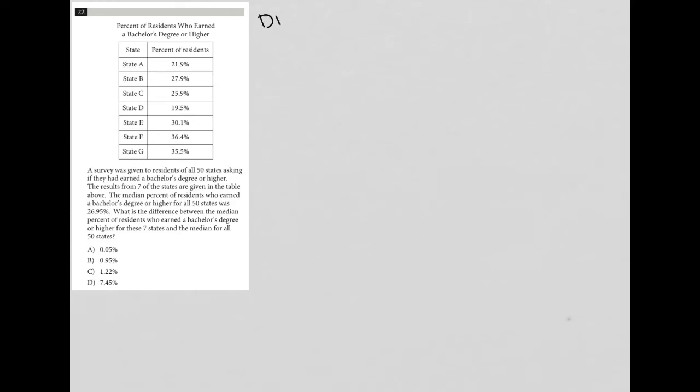This question looks like it's going to be a diagram question. More specifically, this is a table question. The title of this table is percent of residents who earned a bachelor's degree or higher. It looks like our first column here is a state and we have just states by letters A through G. And then our second column here is a percent of residents. I like to just pinpoint a row and make sure I understand what's going on. So what I just circled here says that state C has 25.9% of its residents that have a bachelor's degree or higher.